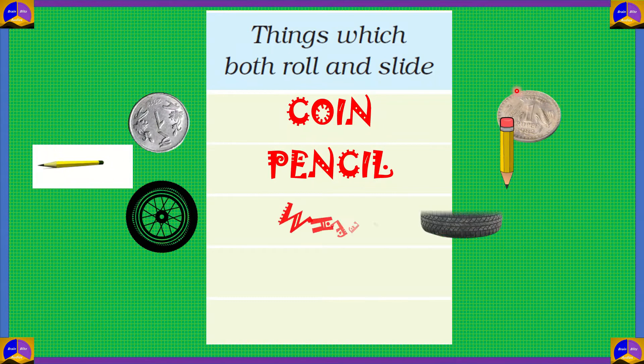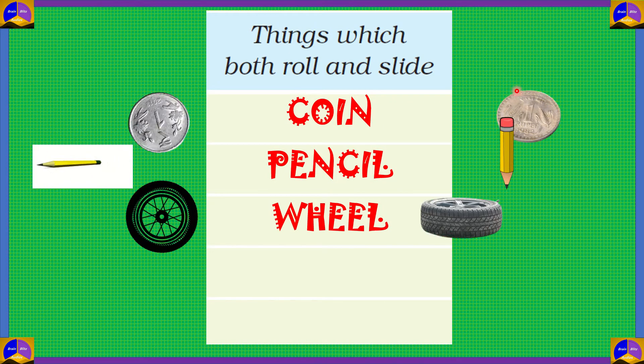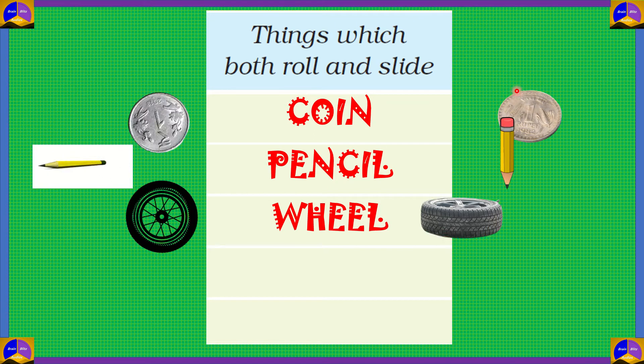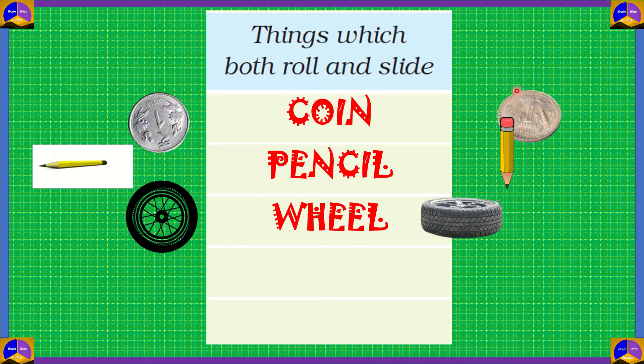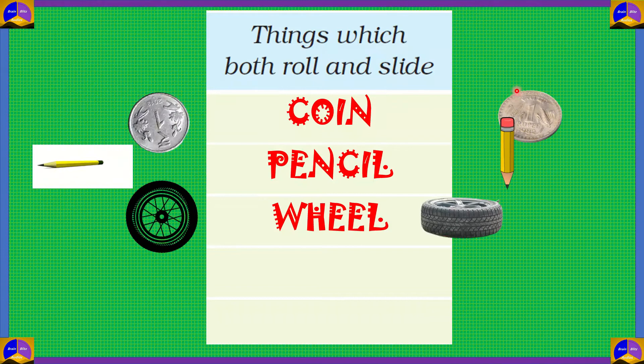Then, we have a wheel. If you notice the wheels of a car when it's driving, then it goes round and round. So, the wheel rolls. But if we take out the wheel and put it on the ground and we push it, then it will slide.